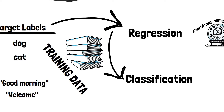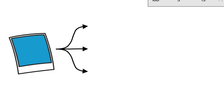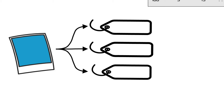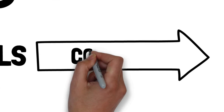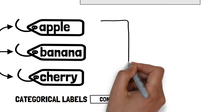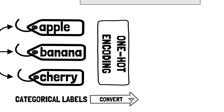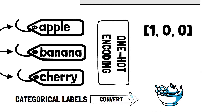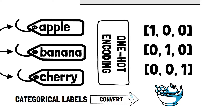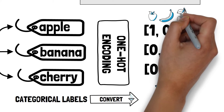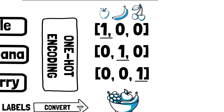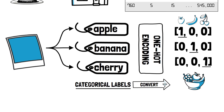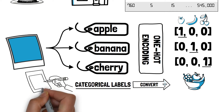Classification tasks, on the other hand, require a different approach. Here we're aiming to categorize data into distinct classes. However, neural networks fundamentally operate on numbers, not textual or categorical labels. So simply having labels like apple, banana, cherry wouldn't suffice. Instead, the textual labels need to be converted into a format that the network can work with. This is where one-hot encoding comes into play. Using a fruit example, instead of the textual labels, we'd represent each fruit as a binary vector of zeros and ones. Each position in the vector corresponds to a specific fruit category — a 1 denotes the presence of that category, while 0 indicates its absence. By converting our labels into this numeric format, we ensure that our network can effectively learn to classify data points into the correct categories.